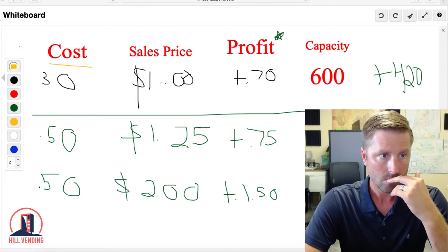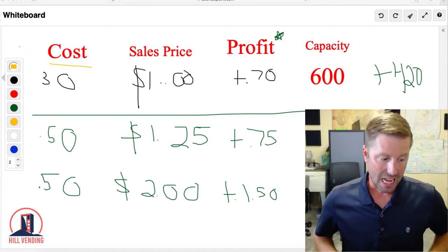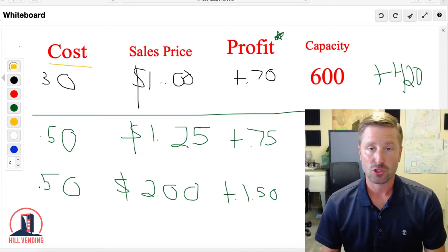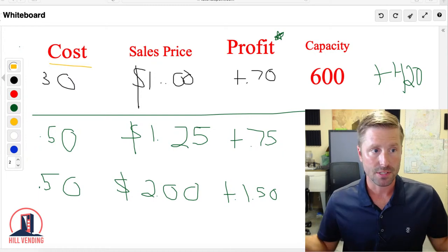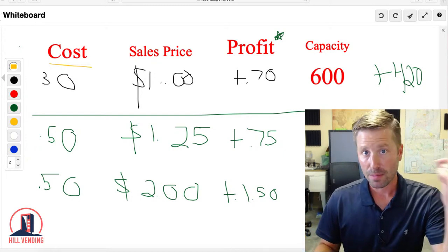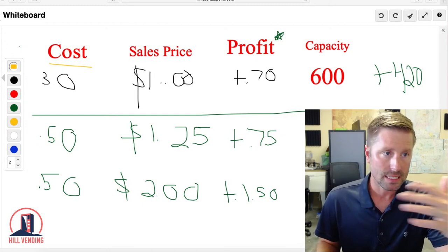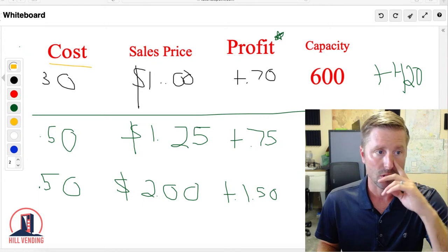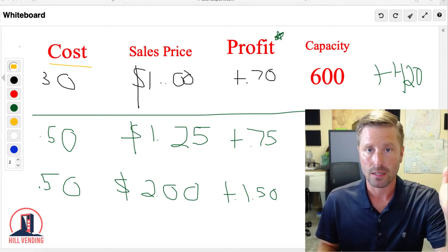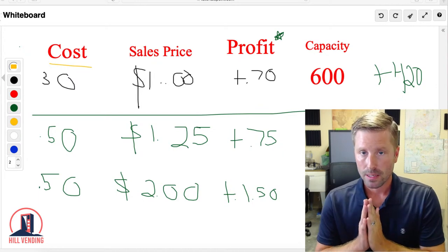Coke and Pepsi, in order to get 20 ounce bottles from them, you can't get them at a distributor. You can, but they're more expensive. You have to basically order them through Coke or Pepsi, and they mark the price up from 80 cents to 90 cents, so you have to charge more.